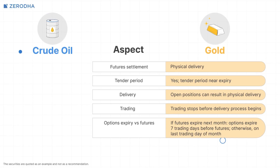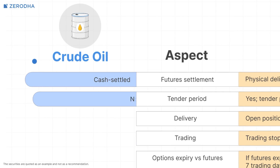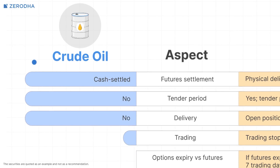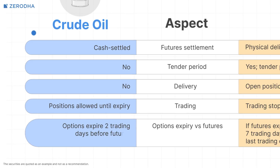Crude oil, on the other hand, works very differently. Crude oil futures are cash settled with no delivery or tender period. Positions can be held right up to expiry and are settled in cash. Crude oil options also follow their own schedule, expiring two days before the underlying future contract.